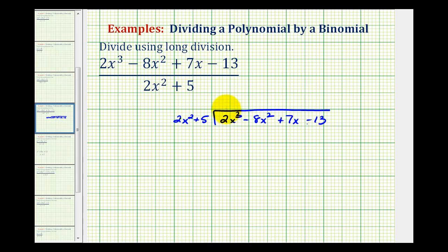So to start this division, we're only concerned about the first term of the divisor and the first term of the dividend. And there are two ways to find the first term of our quotient or our answer. One way is to ask what times 2x² would be equal to 2x³. If we know that would be x, then x would be the first term of the quotient.